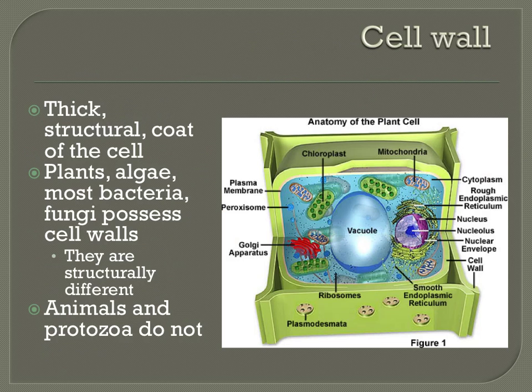While all cells possess a cell membrane, only some cells possess a cell wall. The cell wall is another organelle found on the outside of many types of cells, such as plants, algae, most bacteria, and fungi.